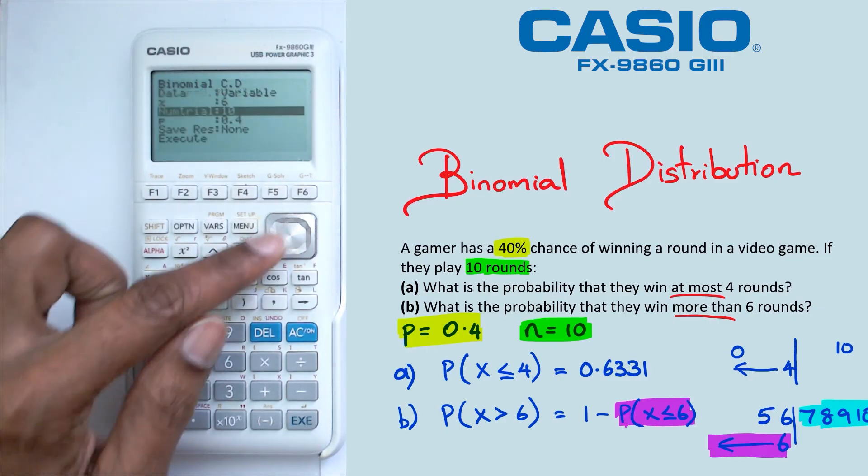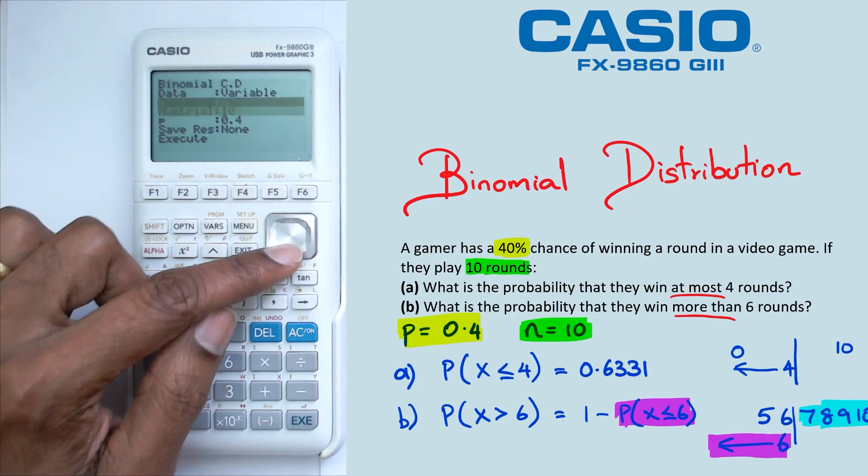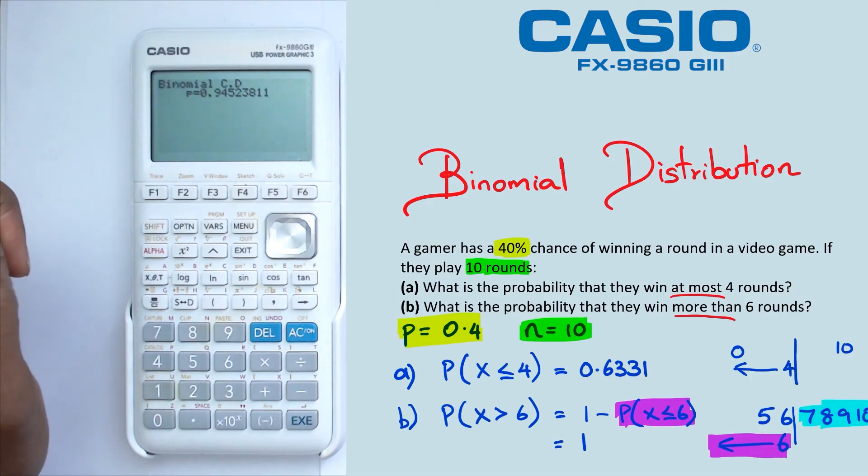We're going to go down X less than six. So we're going to put X is six, number of trials is 10 and 0.4. So we're going to get one minus 0.9452.